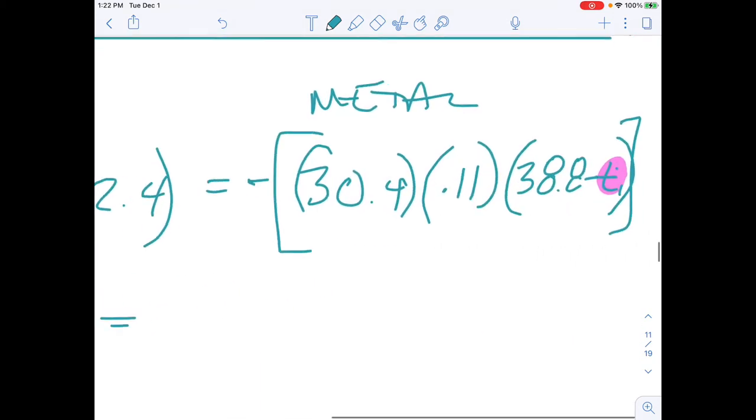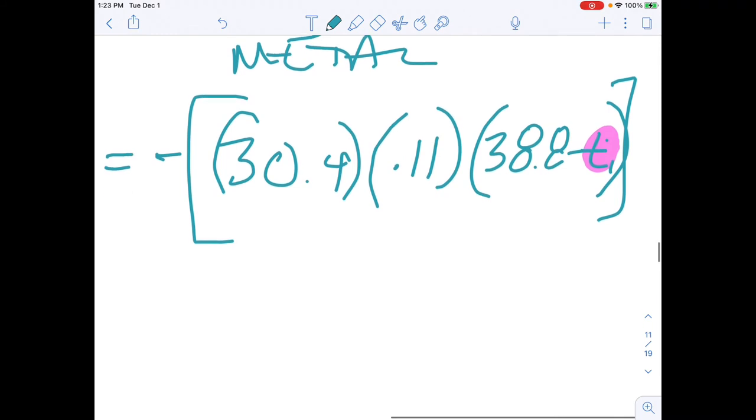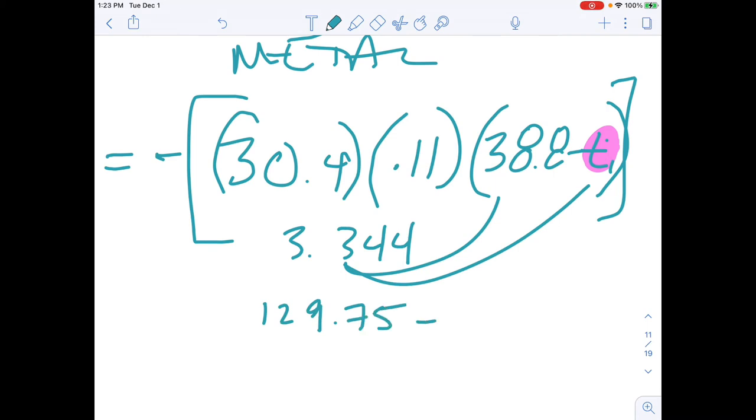I can flip over to this side. I'm going to multiply 30.4 times 0.11. That's going to give me 3.344. And then going to distribute that in. So times 38.8 gives me 129.7 and change, minus 3.344 TI. Then I'm also going to distribute that negative in here. And that's all I can do on that side.